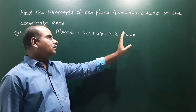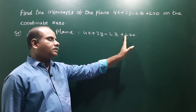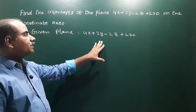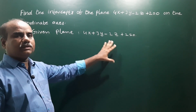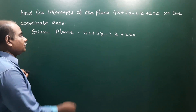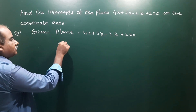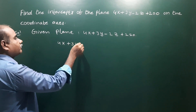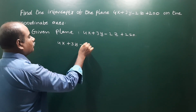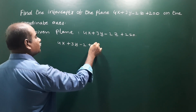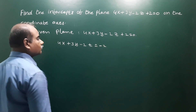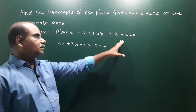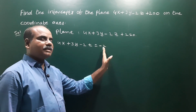First, we transpose the constant term to the right side, then divide the entire equation by that number. So 4x plus 3y minus 2z equals minus 2, with the constant term on the right side.